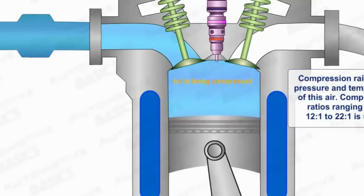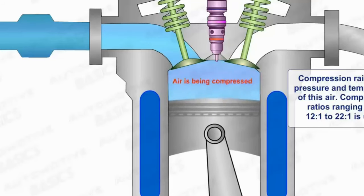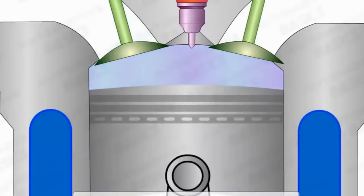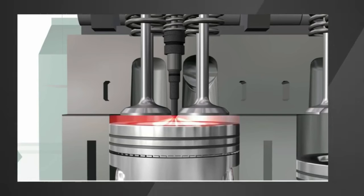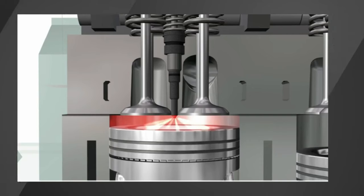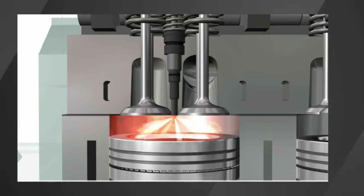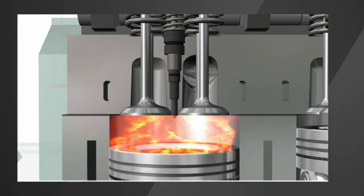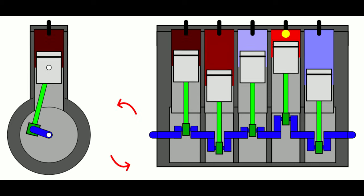A diesel engine does not require a spark. The air required for combustion is first compressed by the piston in the cylinder, after which the fuel is injected. The air, which is strongly heated as a result of the compression, then spontaneously ignites the fuel. The resulting gas mixture wants more space.